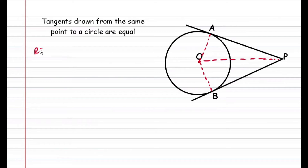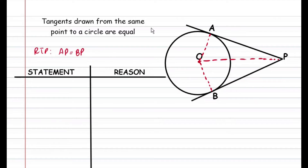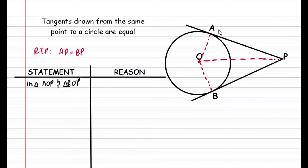We are required to prove that AP is equal to BP. So let's start off by naming these triangles: triangle AOP and triangle BOP. If we look at the line OA, it's a radius intersecting this tangent at the point A — the point of contact between the tangent and the circle. So we know that OA is perpendicular to AP, and because it's perpendicular, the angle OAP is equal to 90 degrees.